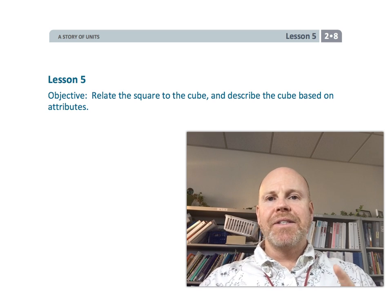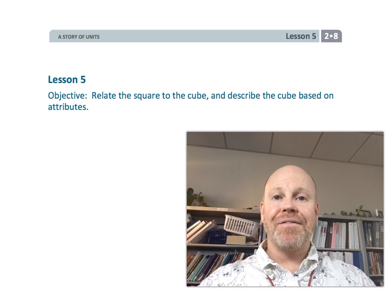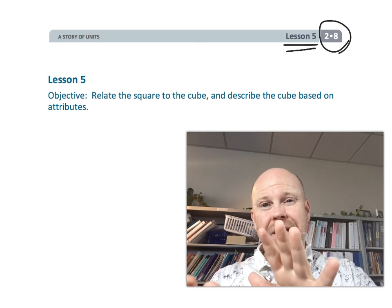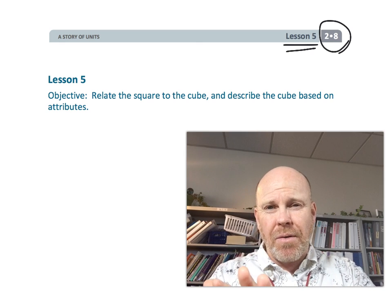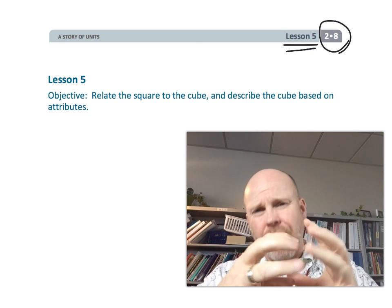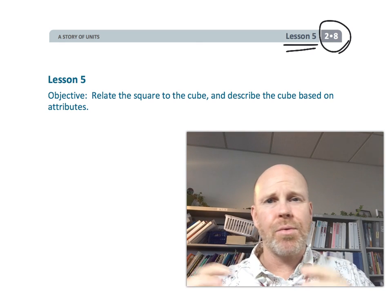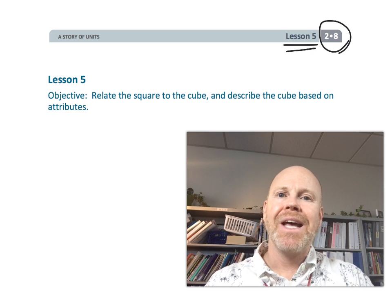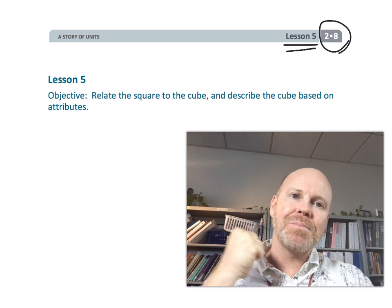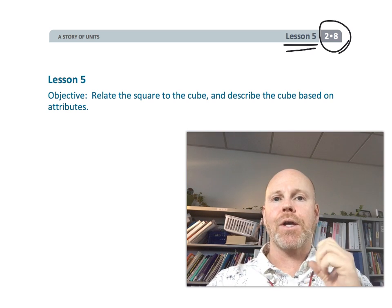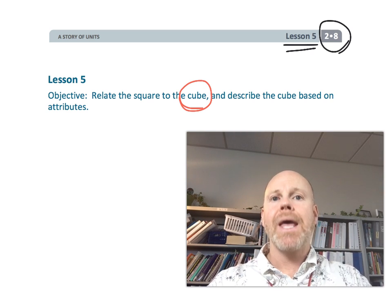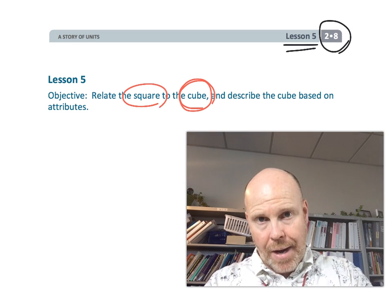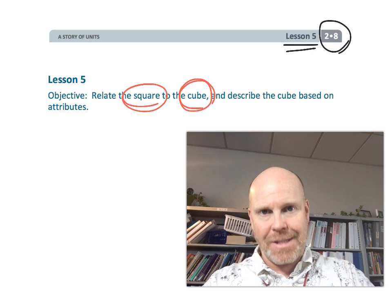All right, this is second grade, module 8, lesson 5. In this lesson, we are going to move from the two-dimensional figures that we've been talking about in lessons 1, 2, 3, and 4, and we're going to move into the three-dimensional. This time, we're going to specifically talk about the cube and its relation to the square. So, let's get started.